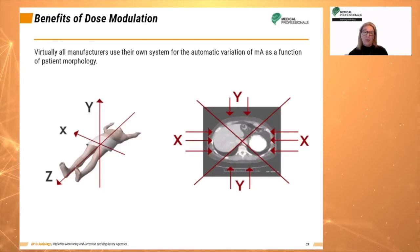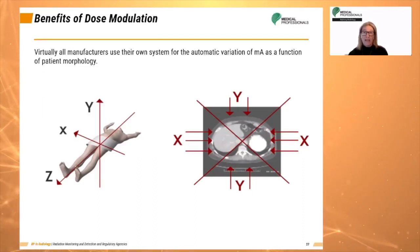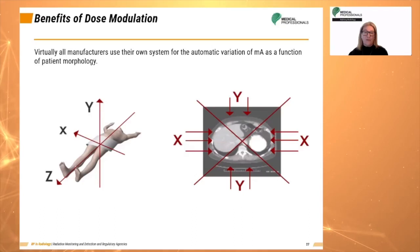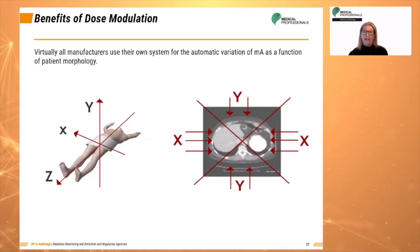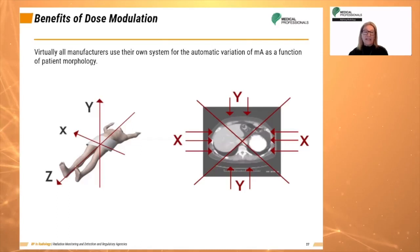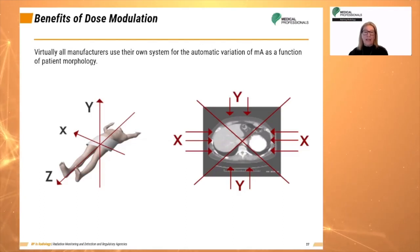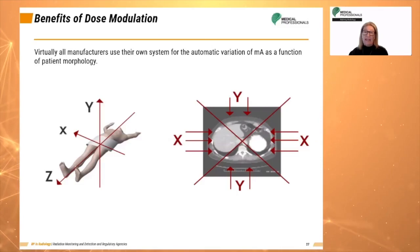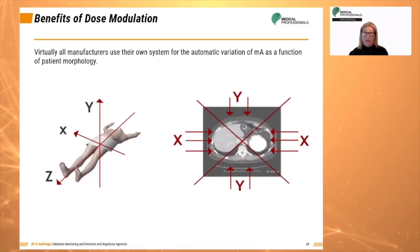Variation is a three-step process, and virtually all manufacturers use their own system for automated variation of MA as a function of patient size. The steps are: first, determine the overall patient size and use the same dose in MA for the entire examination distributed according to morphology; second, the Z-axis delivers a suitable dose within each tube rotation; and third, the X and Y axes modulate dose at each rotation as a function of patient dissymmetry in the axial plane.